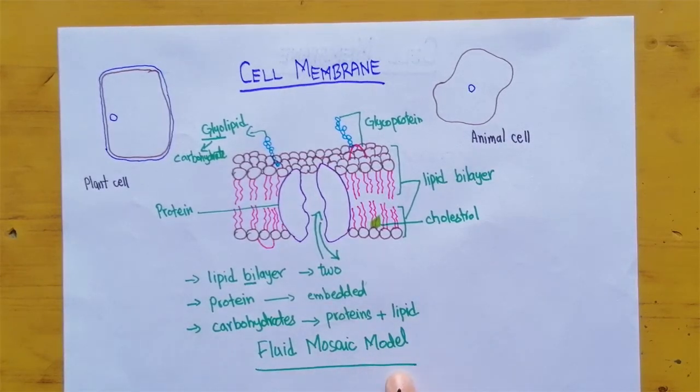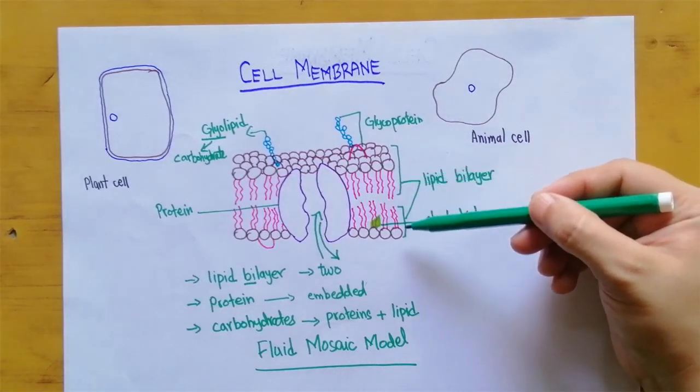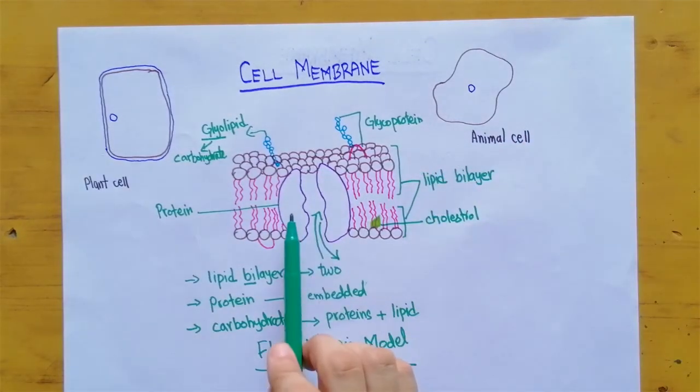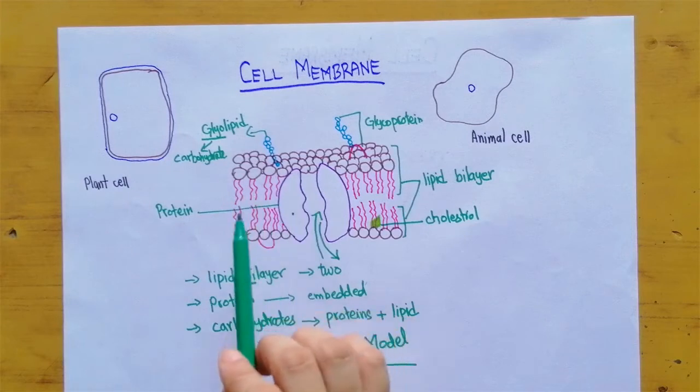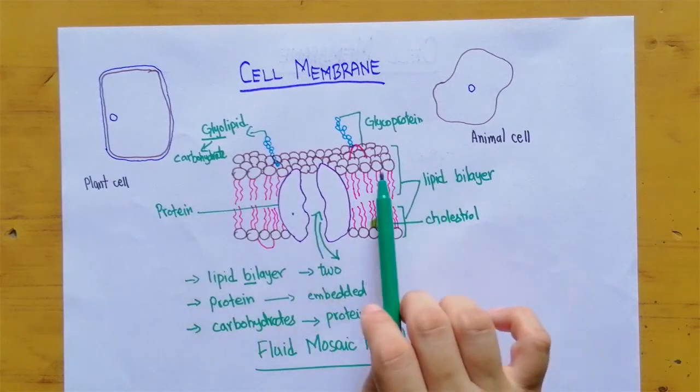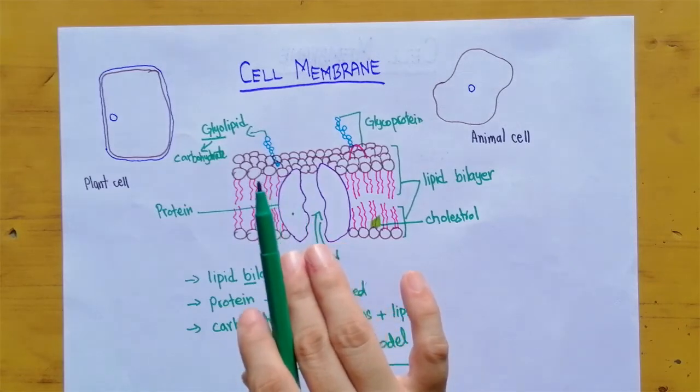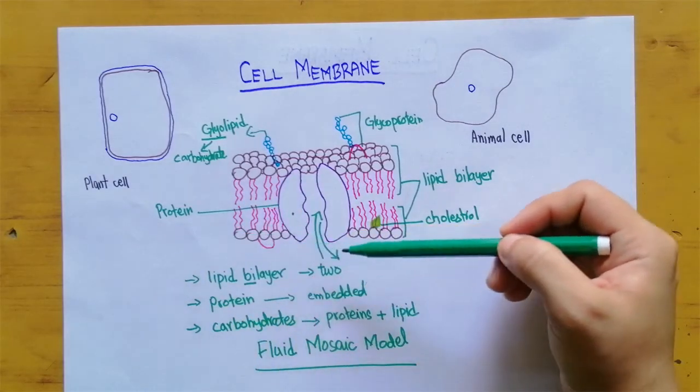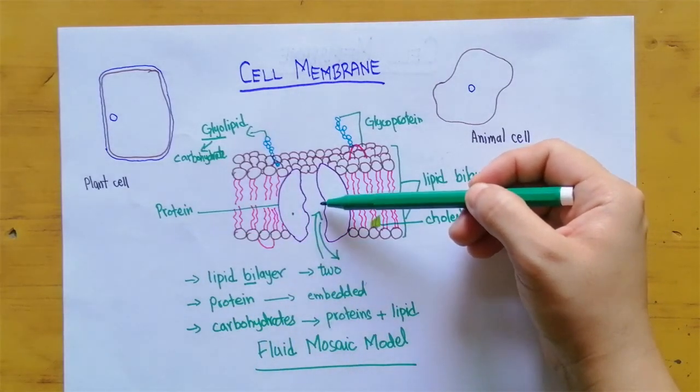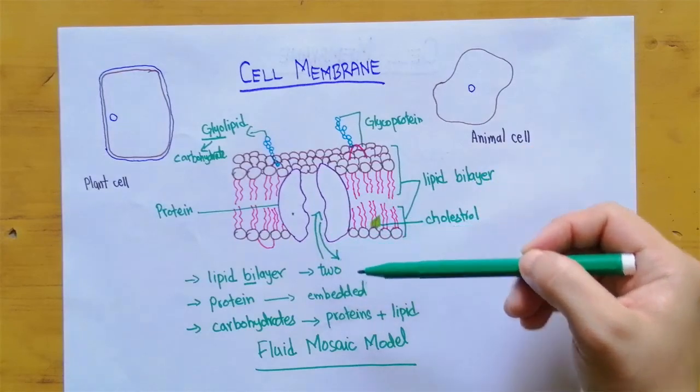According to this model, cell membrane is a lipid bilayer contains embedded proteins. The lipid bilayer gives it the elasticity and fluidity while the proteins allows some molecules to go in and allow some molecules to go out of the cells.